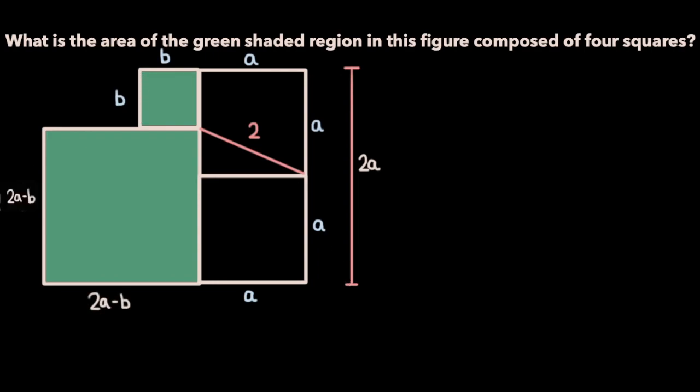Now let's try to write a general formula for the area of the green shaded region in terms of a and b. So the area of the shaded region is going to be the area of the smallest square, which is b squared, plus the area of the largest square, which is 2a minus b whole squared. So we have b squared, and now if we expand the 2a minus b whole squared term out, we get 4a squared minus 4ab plus b squared.